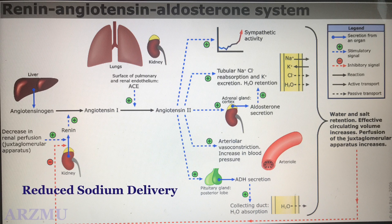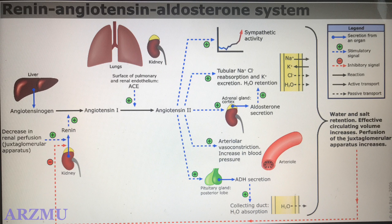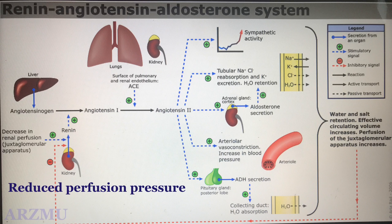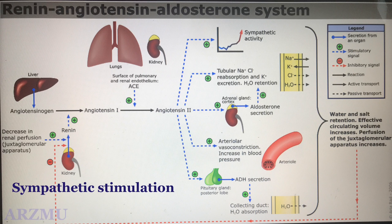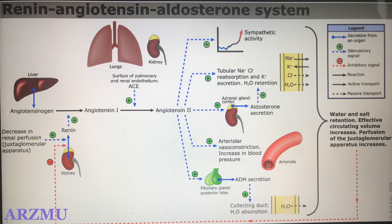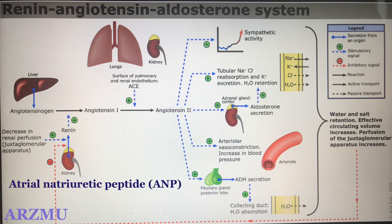Renin is released from granular cells of the renal juxtaglomerular apparatus in response to one of three factors: when there is reduced sodium delivery to the distal convoluted tubule detected by macula densa cells, when there is reduced perfusion pressure in the kidney detected by baroreceptors in the afferent arterioles, or when there is sympathetic stimulation of the juxtaglomerular apparatus via beta-1 adrenoreceptors.